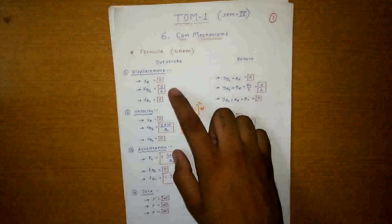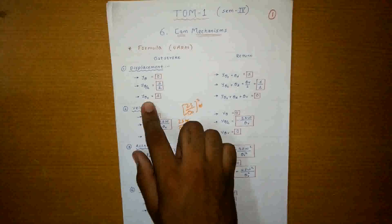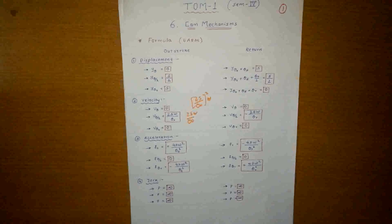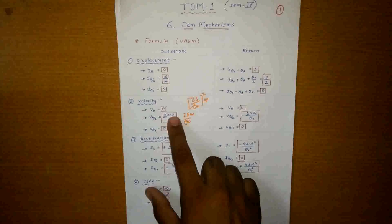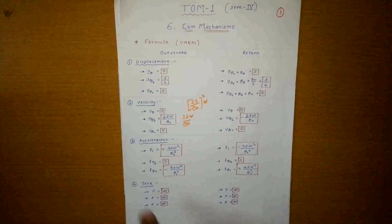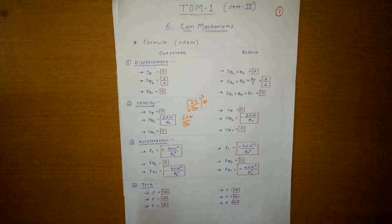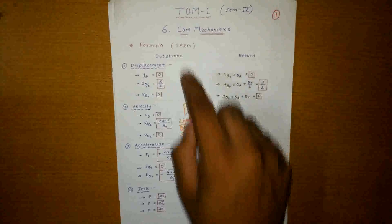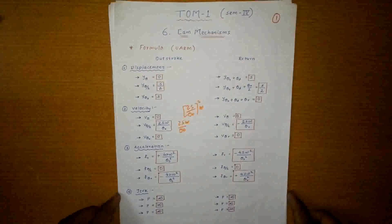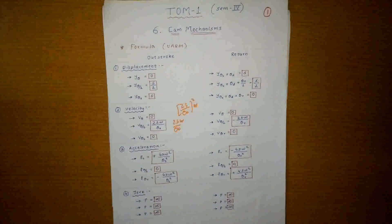For displacement, it is 0, s/2, and s on the right-hand side, with y0, y-theta/2, and y-theta — the theta values will be given in the question. For velocity, there is a formula which can be carried forward for acceleration. For acceleration, you have to remember the formula: 2s·Omega upon theta0. For velocity, at 0 and at theta the value is 0.